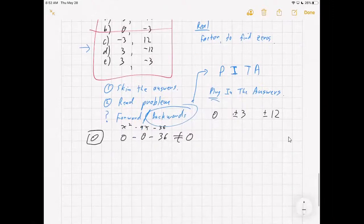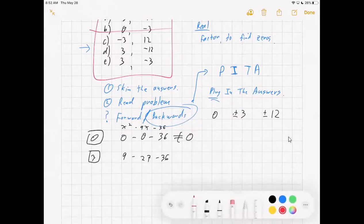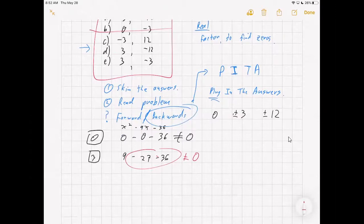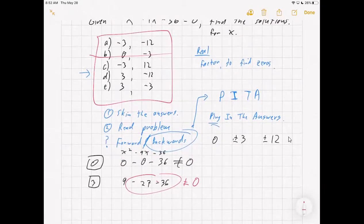So the next thing you would check is the three, because positive three is the easiest to work with. So you have nine minus 27 minus 36. I can clearly see, looking at these big negatives, that is not going to be zero, because we have a lot of negative and not much positive. So three does not work. So that eliminates line through D and line through E.